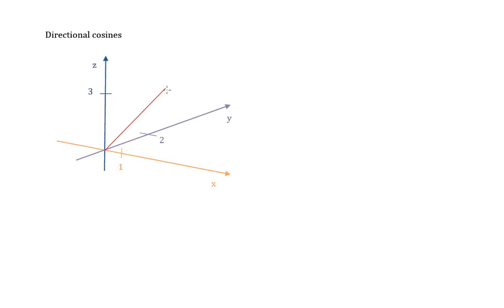So we have this vector A — I'll call this point A, and this shall be vector A. This vector goes by the coordinates (1, 2, 3), which means x equals 1, y equals 2, and z equals 3.